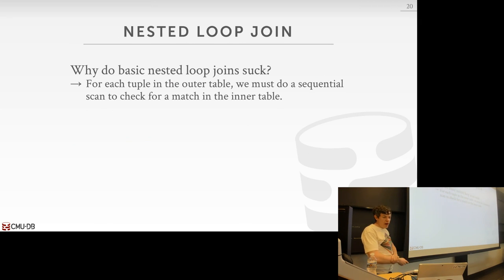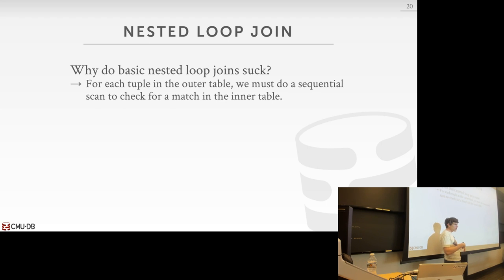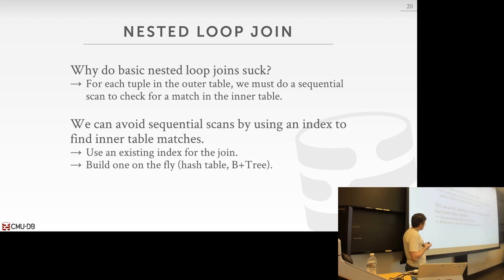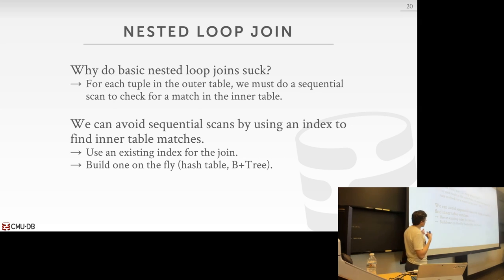In general, why does the nested loop join suck? Because it's basically a brute force search — sequential scans on both the outer and inner relation, with no knowledge of data locality. Sequential scans are always the fallback option when we don't have an index. But if we have an index, or if data is sorted as in the sort merge join, we can be smarter. The database system can recognize that if you have an index based on the keys you want to join on, you can use that for the inner loop instead of doing a sequential scan every time.